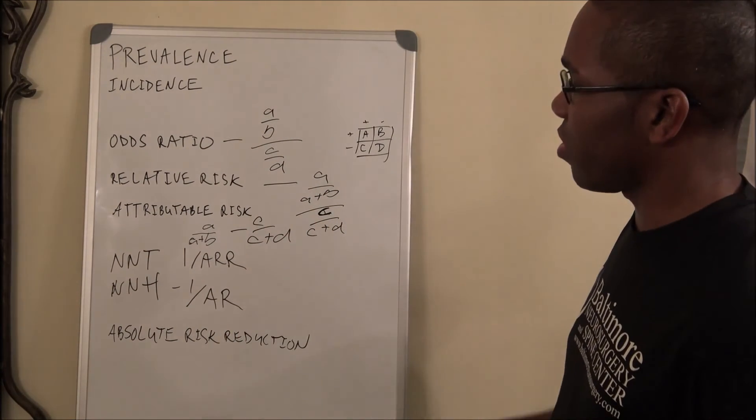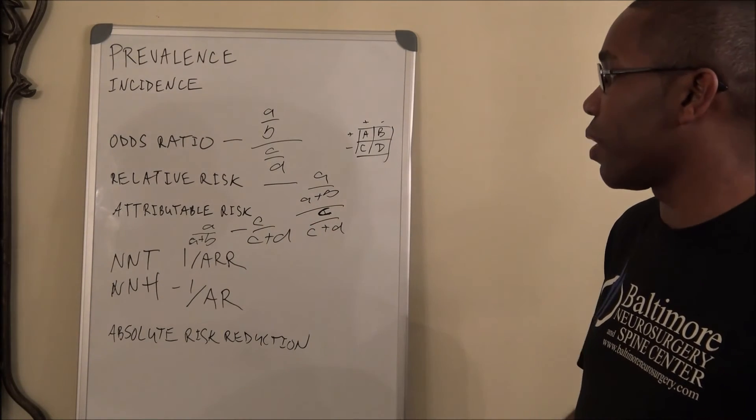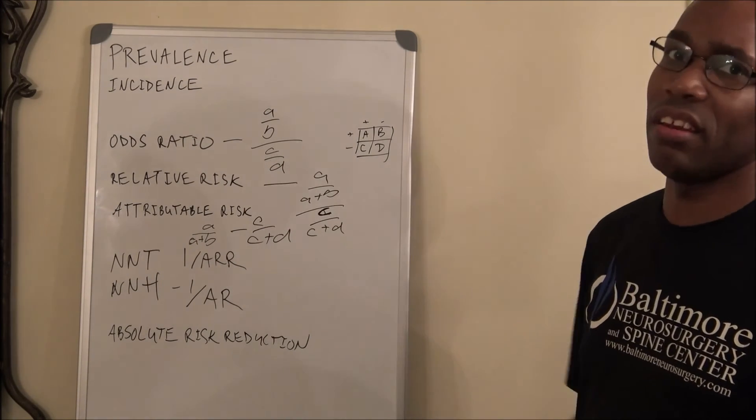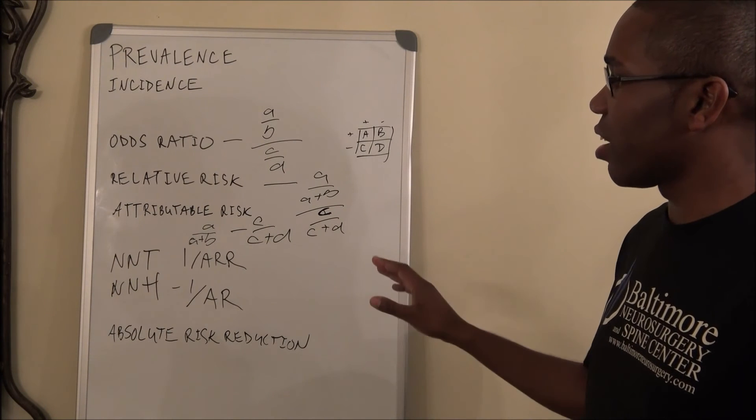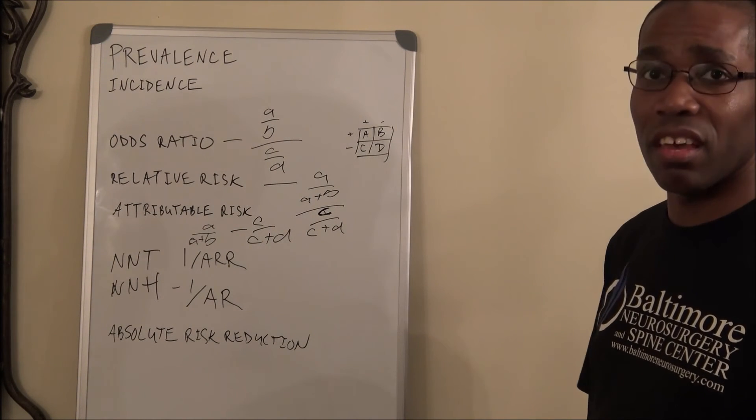So, attributable risk, you're going to have three numbers once again, but you're going to have A over A plus B. And instead of dividing it, like relative risk, you're actually going to subtract it. It's going to be A over A plus B minus C over C plus D.